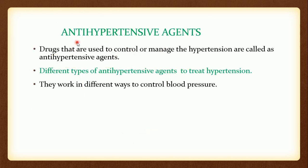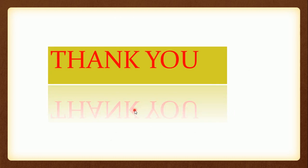How we can define antihypertensives? The drugs that are used to control hypertension — we cannot completely cure BP, we can just control or manage it. Such drugs are called antihypertensives. Different types of antihypertensives are available and they work in different pathways to control blood pressure. Classification, structures, and mechanism of action of each drug will be covered in the next video. Thank you.